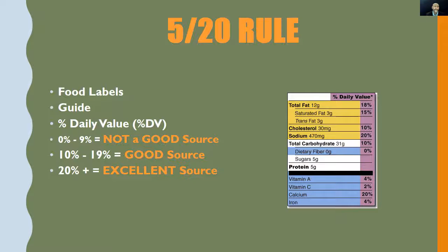Now it's time to dive into the 520 rule. The 520 rule is all about food labels. Ultimately the 520 rule is a guide that lets you know whether or not a food item is a good source or not a good source of any particular nutrient. When we talk about the 520 rule, we're really talking about percent daily value, abbreviated as percent DV. Let's take a look at our sample food label — notice that some parts are highlighted in lavender or purple showing percent daily value and percentages.